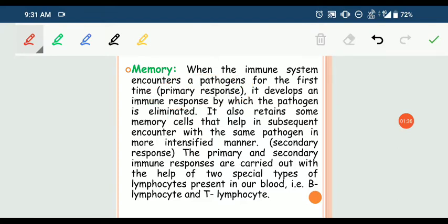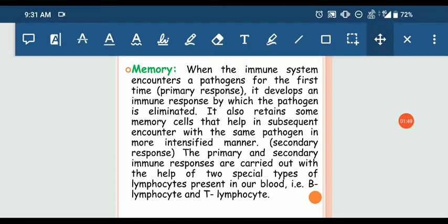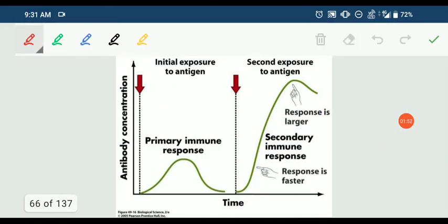The second time when the bacteria enters our body, our body shows an intensified response, which we also know as the secondary response. This is the primary immune response. When our body comes in contact with bacteria, the immune response takes more time to develop and will kill the bacteria and the antigen.